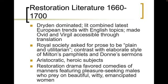When we look at Restoration literature from about 1660 to 1700, Dryden is going to dominate it. The literature is going to combine the latest European trends with more English-favored topics. We're also going to see the classics revived, making Ovid and Virgil accessible through translations. You're also beginning to see royal literary societies asking for prose to become more plain and more utilitarian for the masses, in contrast with the elaborate style of Milton's pamphlets and Donne's sermons of the previous age. Once again we're looking at classic heroic subjects — looking again at Ovid and Virgil — mostly because the aristocrats are asking to look back towards that heroic age. We also see in Restoration drama a favoring of comedies of manners featuring pleasure-seeking males who prey on beautiful, witty, yet somehow emancipated women.